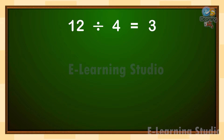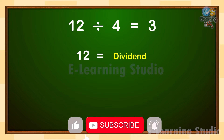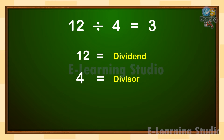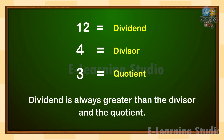This sign stands for division. Here, 12 is the dividend — the number that gets divided. 4 is the divisor — the number that divides. 3 is the quotient — the answer in division. Remember, the dividend is always greater than the divisor and the quotient.